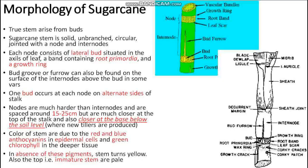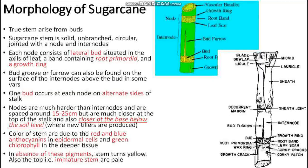The color of the stem is due to the red and blue anthocyanins present in the epidermal cells. Anthocyanins appear red or blue. Chlorophyll is present in a different tissue. In the absence of these pigments, the stem turns yellow. Immature stems are pale in color.